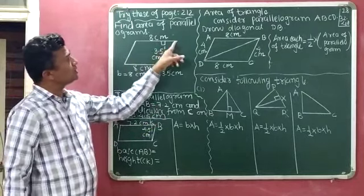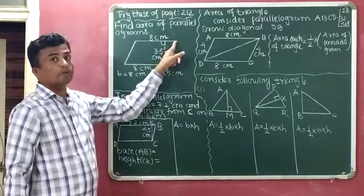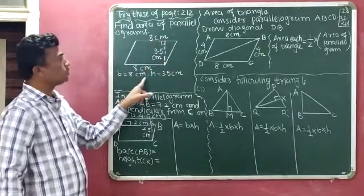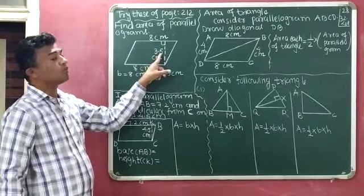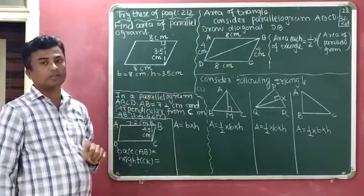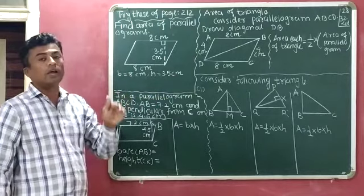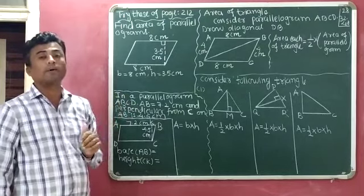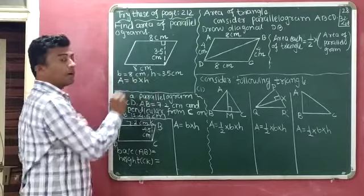So the base B is equal to 8 cm, and the height H is equal to 3.5 cm. Now we have the base and height of the parallelogram, and we have to find the area. We know the formula: area of the parallelogram is equal to base multiplied by height.